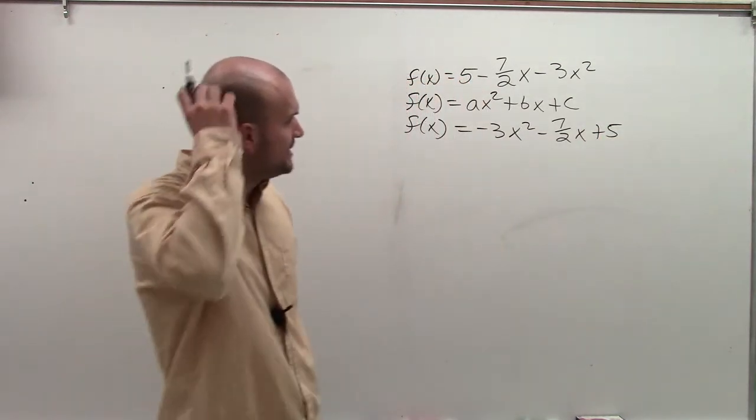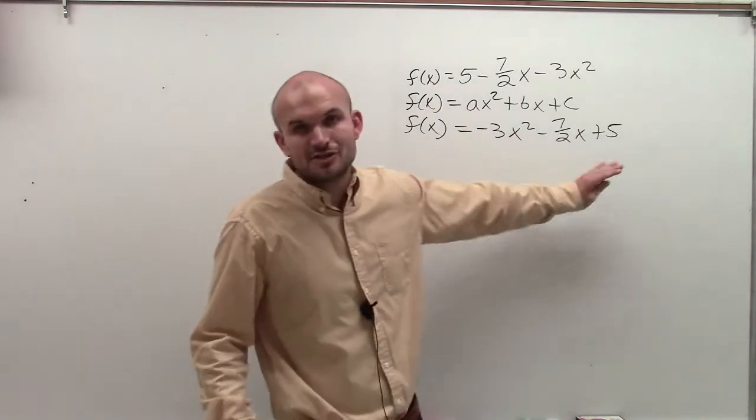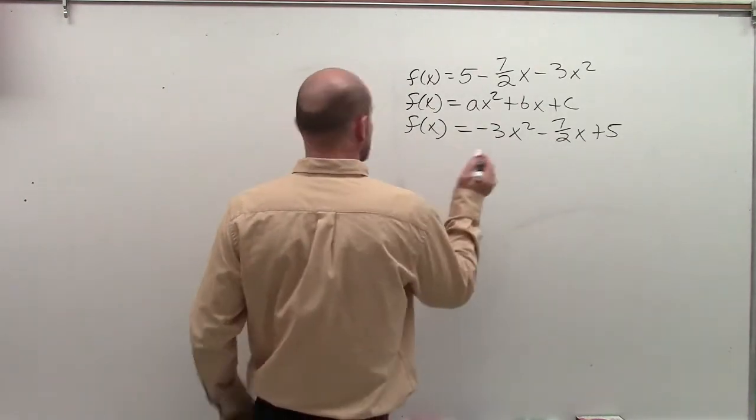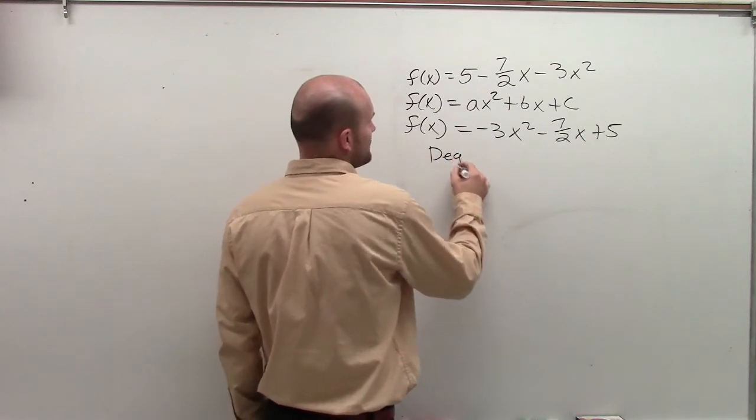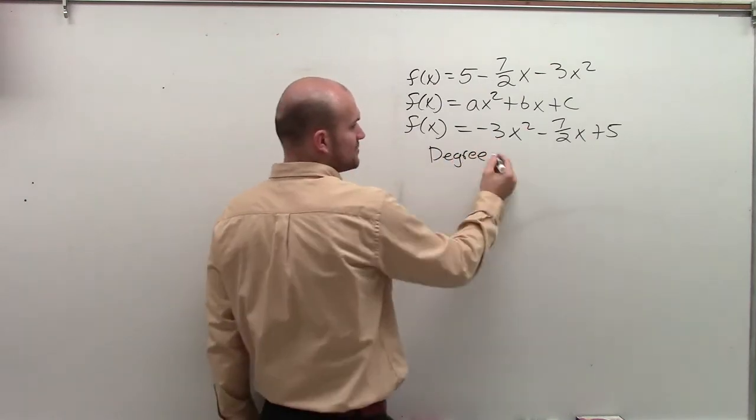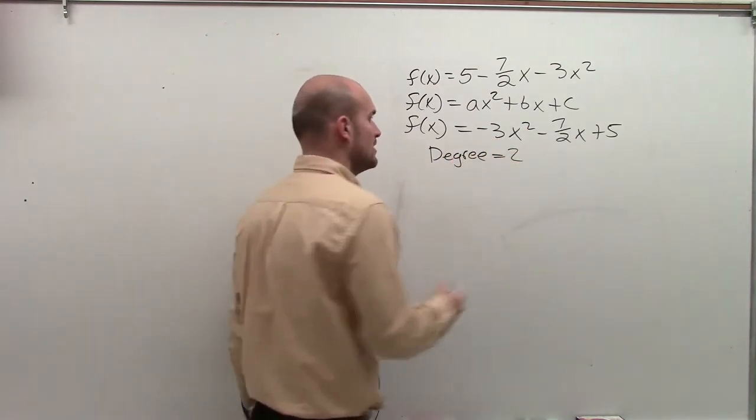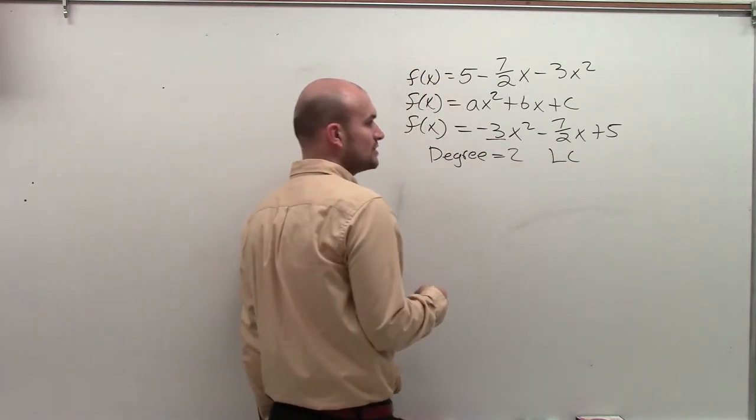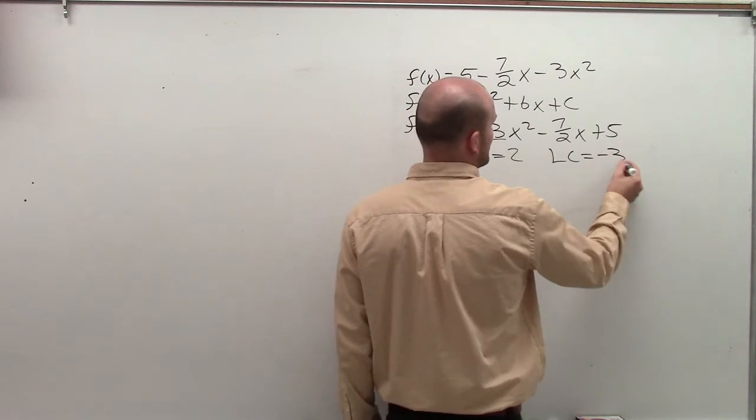Now don't really be too concerned about the coefficient, the numbers, fractions, decimals. It doesn't really matter. But all we're going to be concerned about is our degree, which is our highest exponent, which in this case is equal to 2, and our leading coefficient, which is your coefficient of your leading term, which in this case is negative 3.